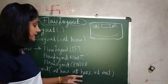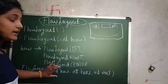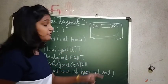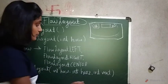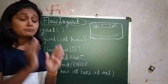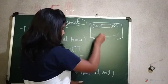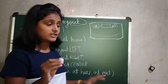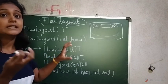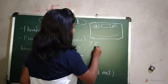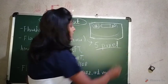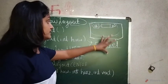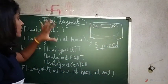The next constructor is FlowLayout(int align, int hgap, int vgap). Here you pass the alignment constant as per the requirement, and for horizontal and vertical you pass numbers representing the space between components — a horizontal gap and a vertical gap. If you don't specify this space, the default gap between two components is five pixels. This is overall about the FlowLayout.